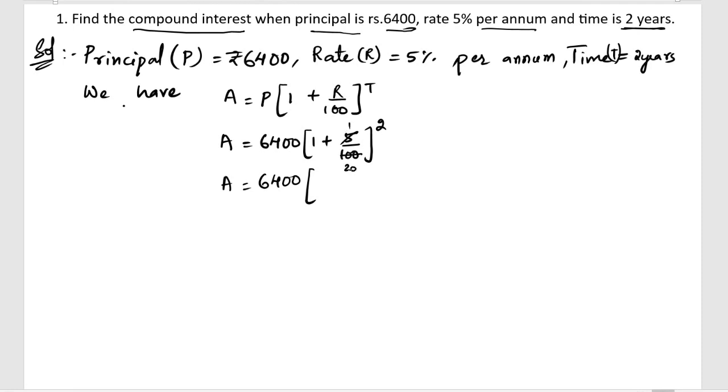5 ones are, 5 20s are, so 1 plus 1 by 20 whole square. So A equals 6400, we can multiply this 20 with 1, so 21s are 21, 21s are 20 plus 1 is 21, so 21 by 20 whole square.